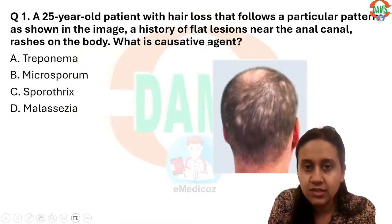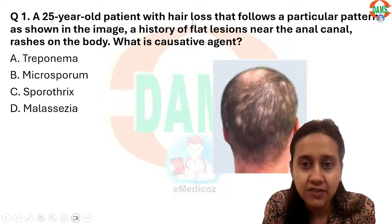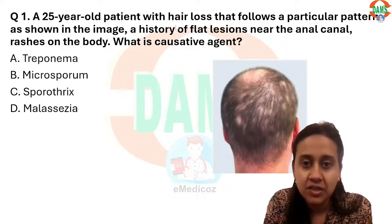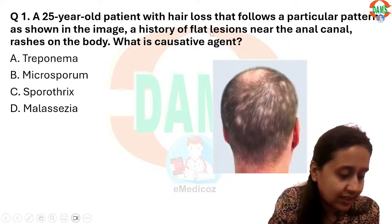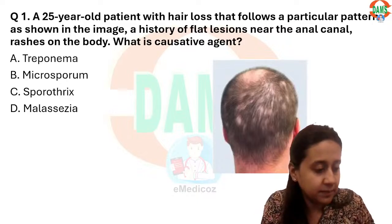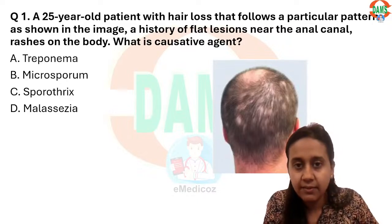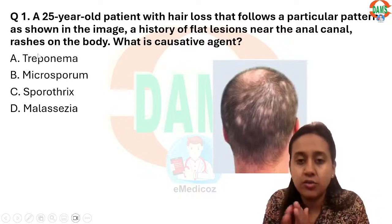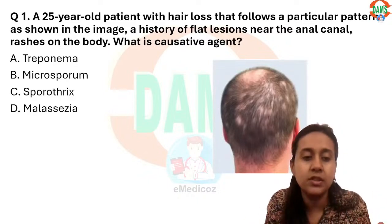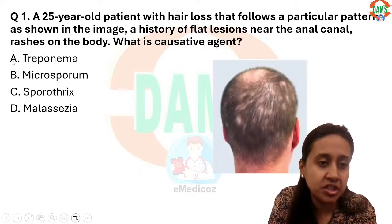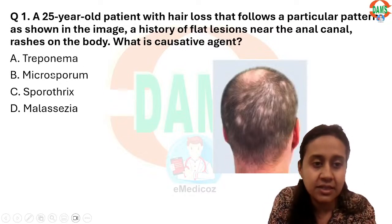For syphilis, especially secondary syphilis patients, you see flat lesions on the genitalia. These flat moist lesions are known as condyloma lata. In secondary syphilis, there are multiple rash lesions all over the body. So this can be a secondary syphilis patient with moth-eaten alopecia, and the answer becomes Treponema.